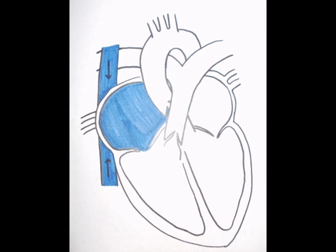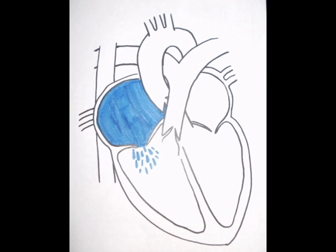Blood enters the right atrium through the superior and inferior vena cava, two large veins which have collected blood from all throughout your body. At this point, the blood is low in oxygen. Once inside the right atrium, blood passes through the right atrioventricular valve into the right ventricle.